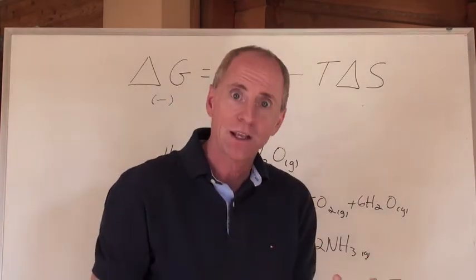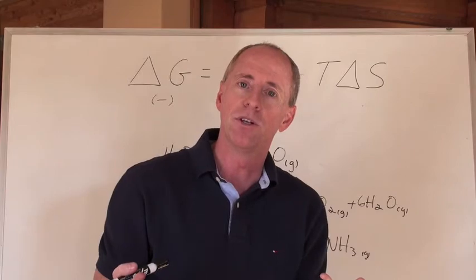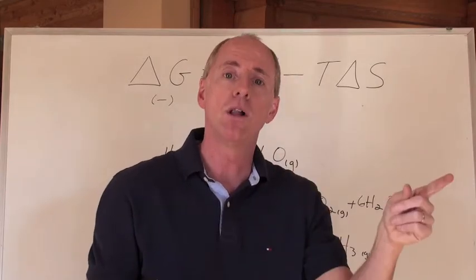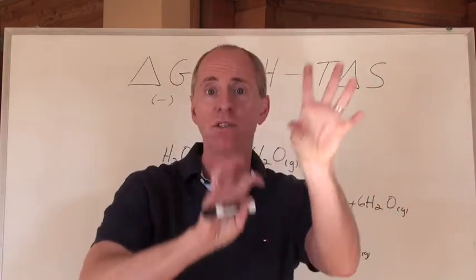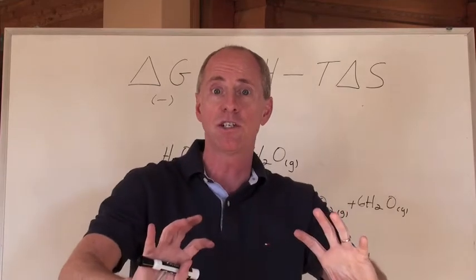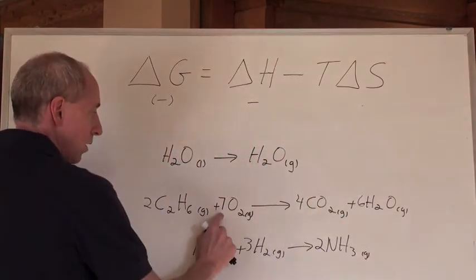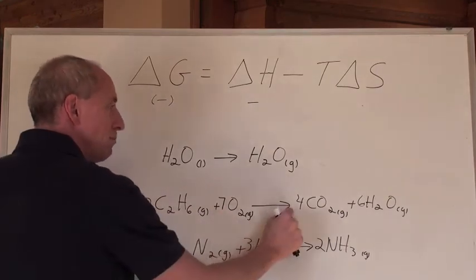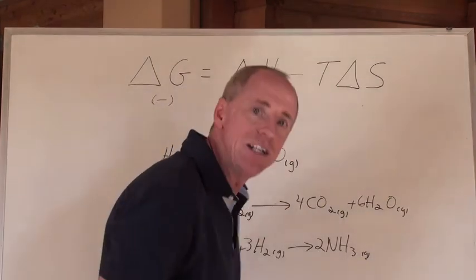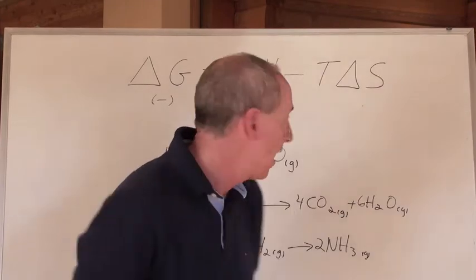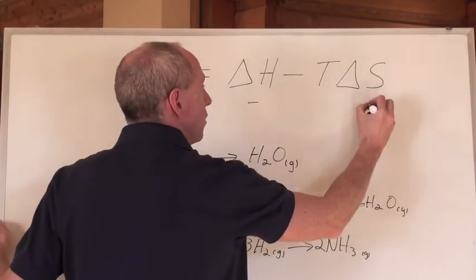Well, if that's all equal, look at the number of moles that are produced. Because more molecules makes more different positions that everything can assume in three-dimensional space and more randomness. Seven molecules, two plus seven is nine molecules, makes ten. That's an increase in chaos. And so, therefore, that's a positive here.